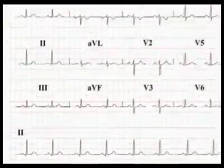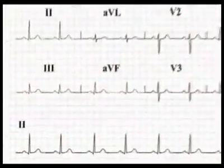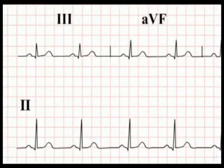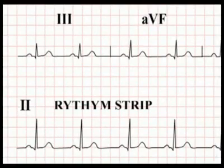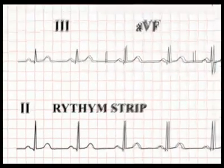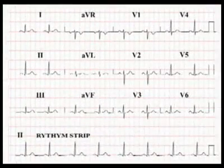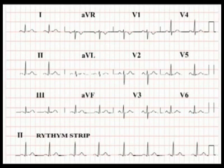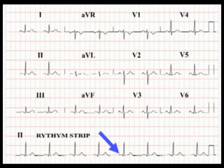If you look at the bottom of the ECG readout you will see a long run of recording from lead 2. This is called a rhythm strip. We use the rhythm strip to calculate the heart rate and to diagnose abnormal cardiac rhythms. Lead 2 is used as the rhythm strip as it is the easiest lead in which to see P waves, and identifying P waves is the key to interpreting rhythm disturbances on an ECG.